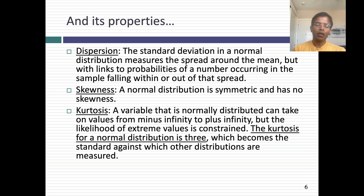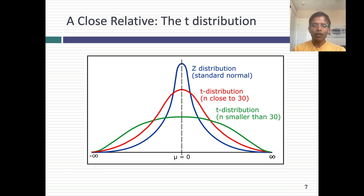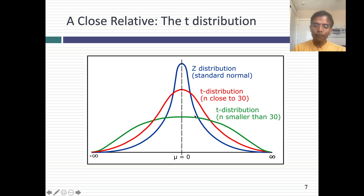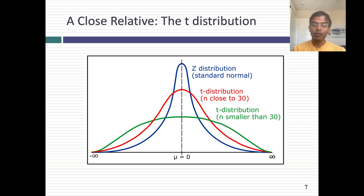But what if you're working with a small sample — 20, 25, 30 observations? There's a distribution that looks a lot like the normal distribution called the t-distribution. The t-distribution has a lower peak and bigger tails than a normal distribution — you can see the contrast. As the sample size gets smaller, the peak falls and the tails become wider. If you have really small samples, a t-distribution might be a better fit for your data than a normal distribution.